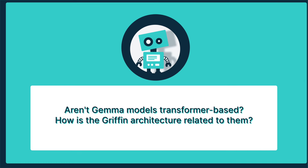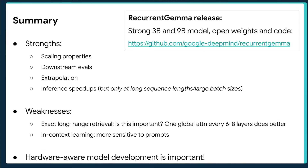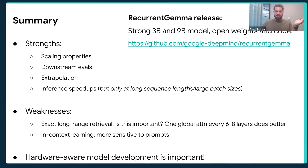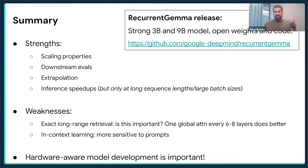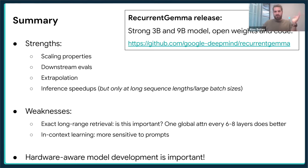Q: You mentioned open-sourcing the Gemma models — the Gemma we usually hear about is a transformer, right? How is recurrent Gemma related? A: Gemma is now an umbrella collection of models. There is the base Gemma model, which is a transformer. There is also recurrent Gemma, available on Hugging Face, Kaggle, and other places where base Gemma is available. Recurrent Gemma models are essentially Griffin architecture models — SSMs with local attention.